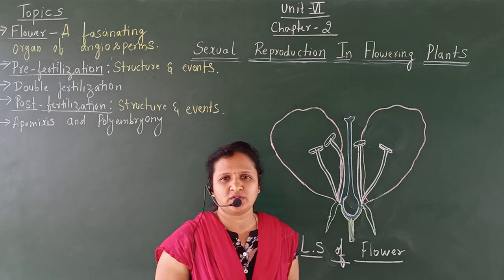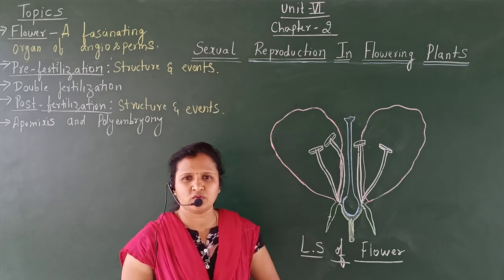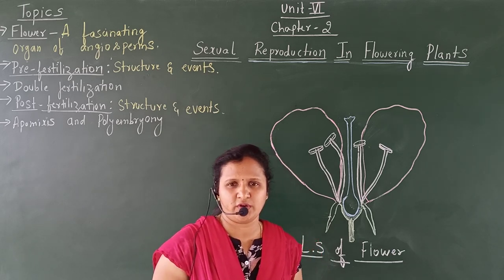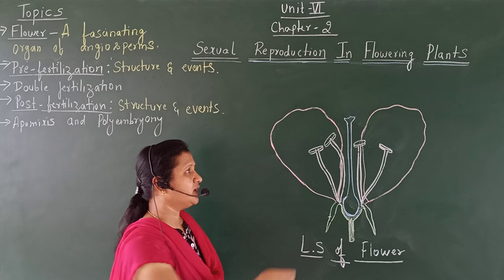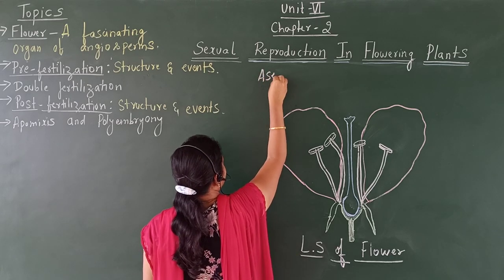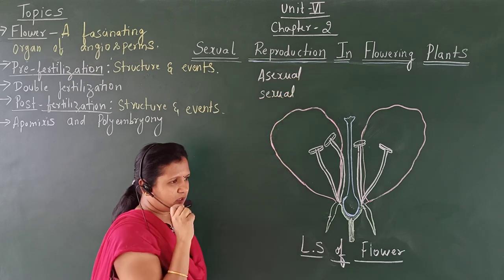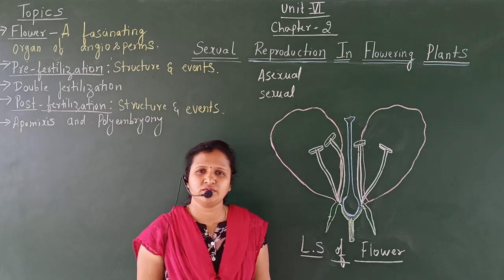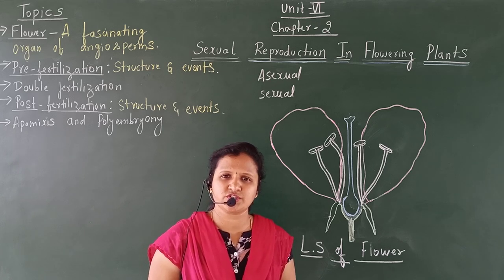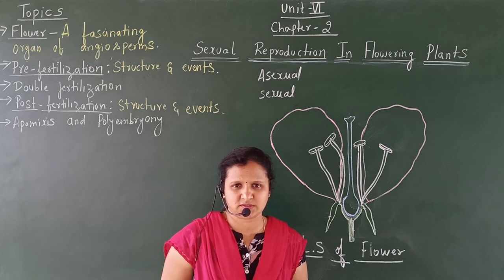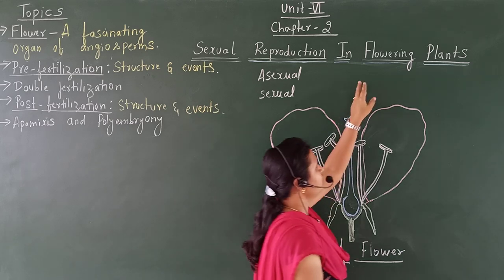First let us know what is reproduction. It is the process in which organisms give rise to offspring of its own kind. In reproduction there are two types: asexual and sexual reproduction. Asexual reproduction is where there is no formation of gametes. Sexual reproduction is where there is formation and fusion of gametes, and that sexual reproduction we will be discussing in this chapter in flowering plants.